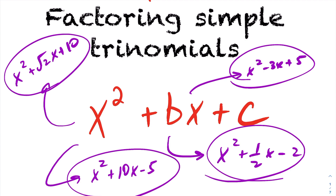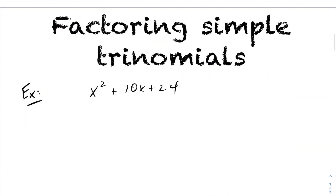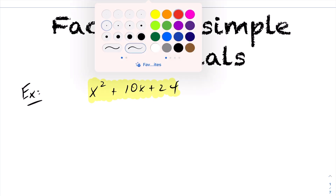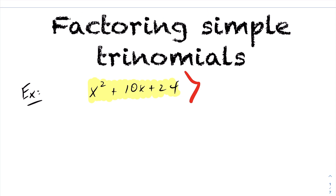Now we want to look at how do you actually factor a simple trinomial. We have a simple trinomial with leading coefficient 1. The b and c values are 10 and 24 respectively. To factor this, you have to calculate what's called the product and the sum. The product is always your constant term — in this case, 24. The sum is always your b value — in this case, 10. So I need to think of two numbers that multiply to be 24 and add to be 10.